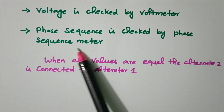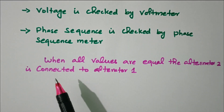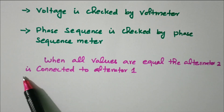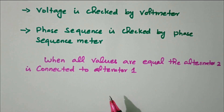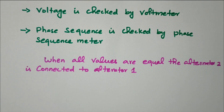Phase sequence is checked by a phase sequence meter for both alternators 1 and 2. If all these conditions are satisfied — voltage, frequency, and phase sequence are equal — alternator 2 is connected with alternator 1 by closing the switch to synchronize with the bus bar. In this video we discussed synchronization or parallel operation of alternators: its definition, need, conditions, and the two methods — dark and bright lamp method and synchroscope method. Thank you for listening; all the best for your examination.